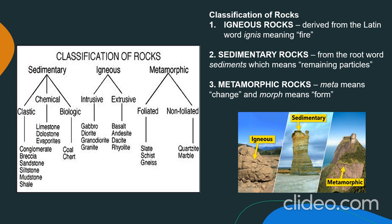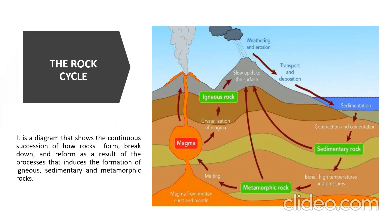Each of these rocks are formed by physical changes such as melting, cooling, eroding, compacting, or deforming, that are part of the rock cycle. The rock cycle is the continual succession of how rocks form, break down, and reform as a result of the processes that induce the formation of igneous, sedimentary, and metamorphic rocks, as shown in the diagram.